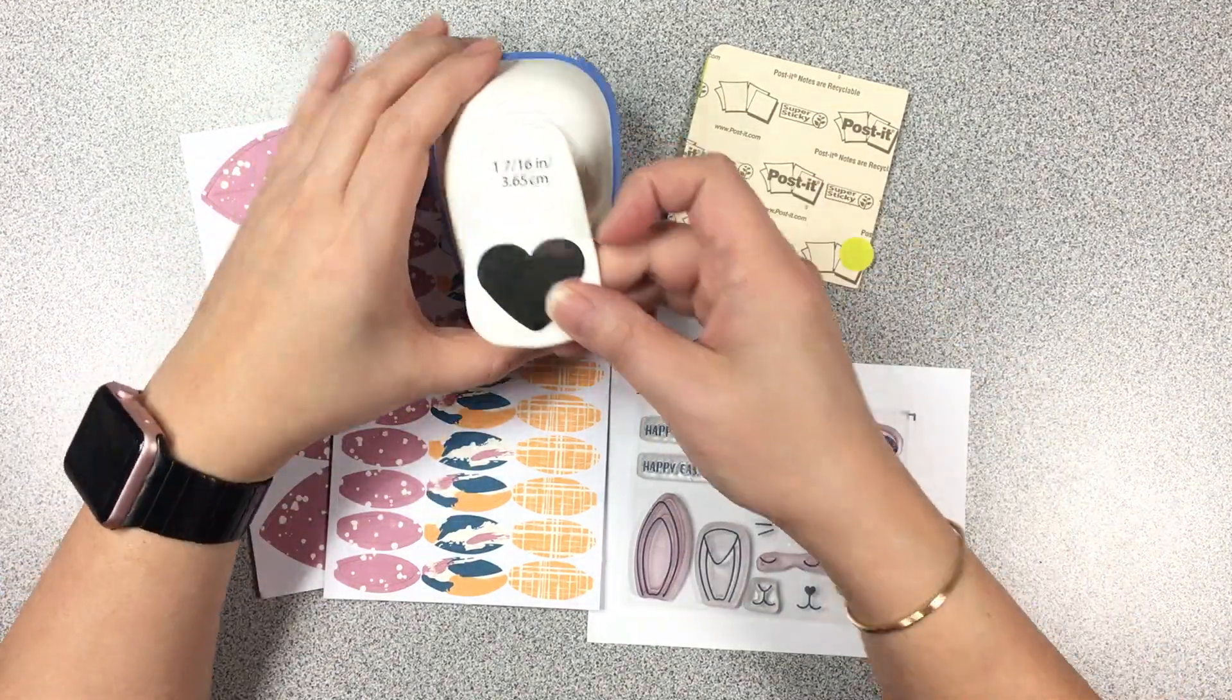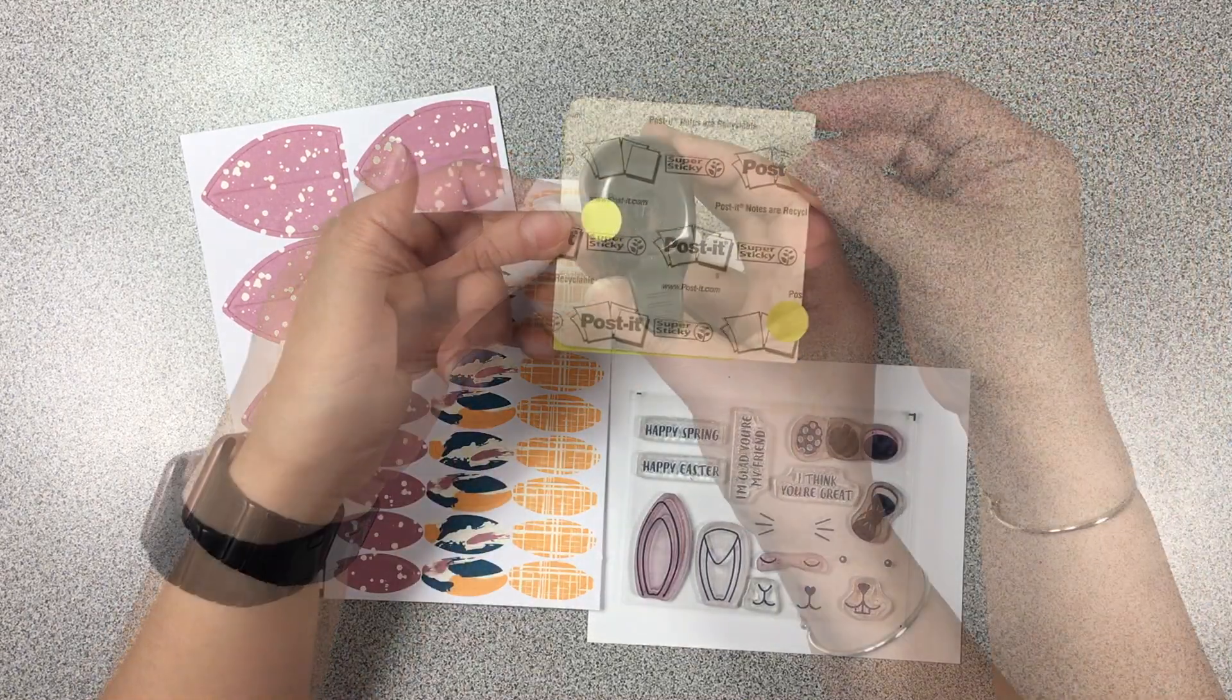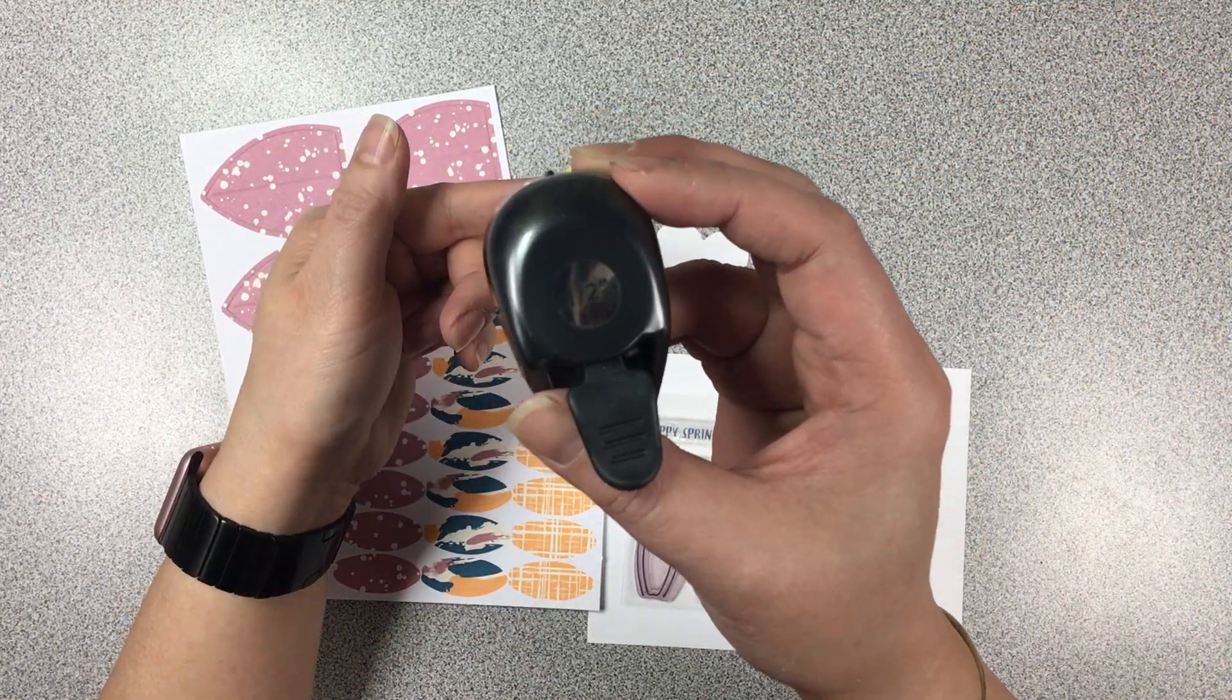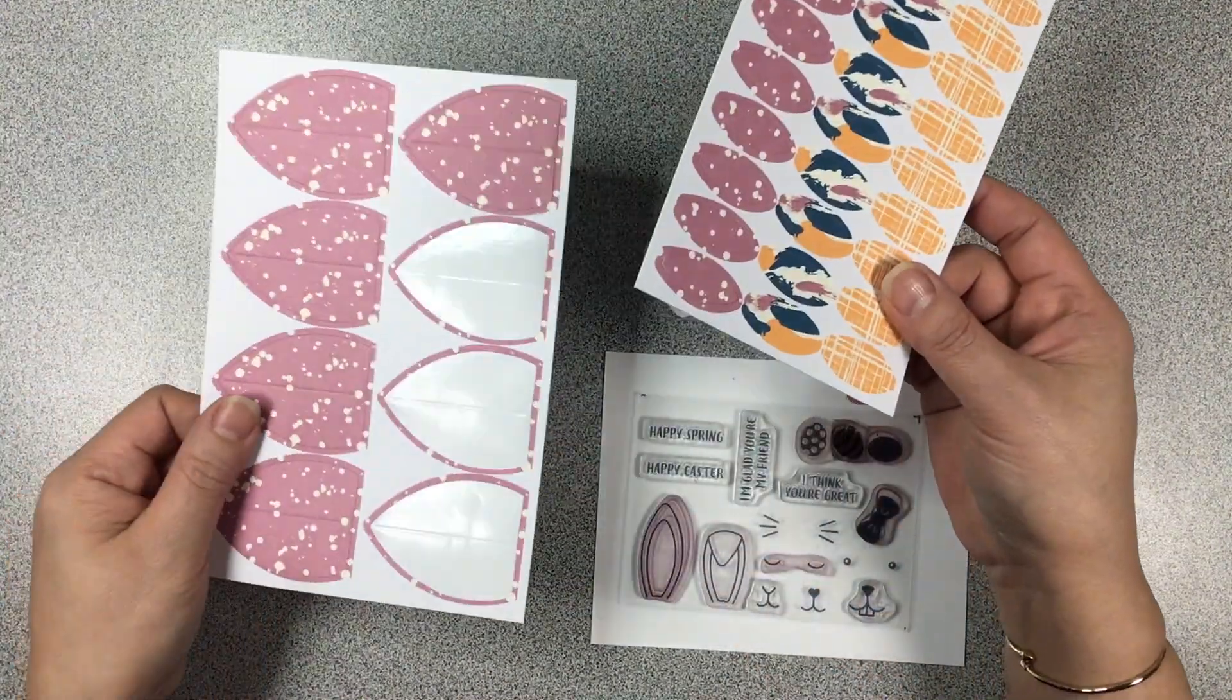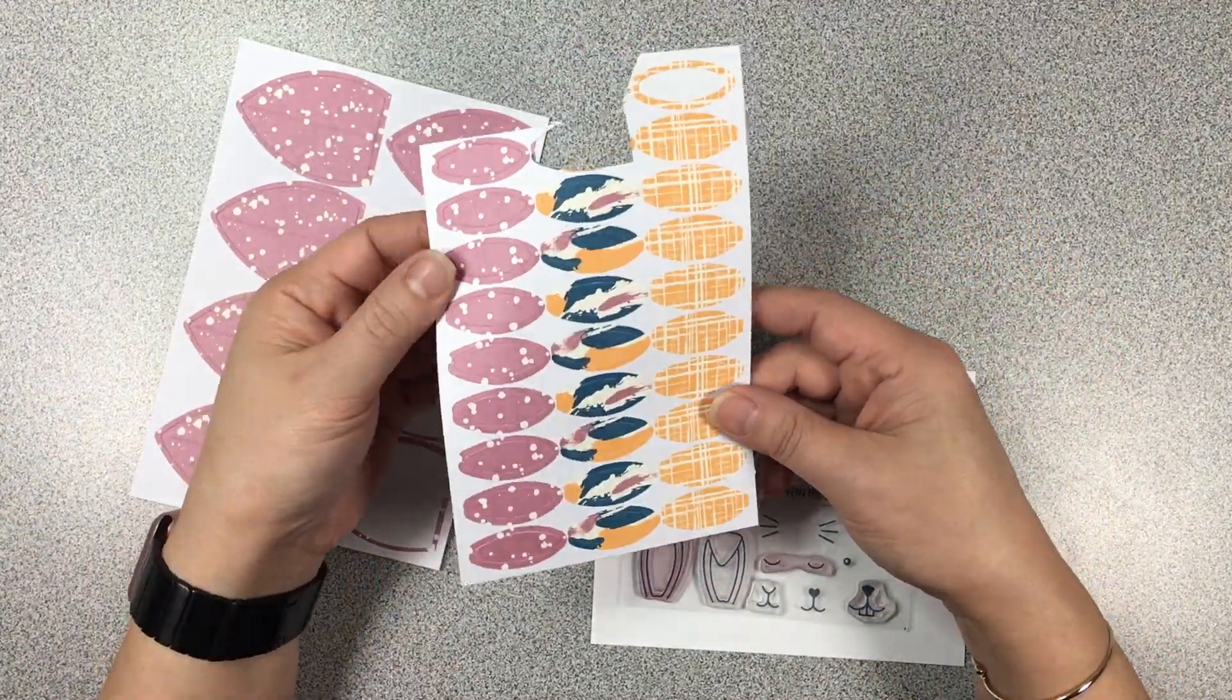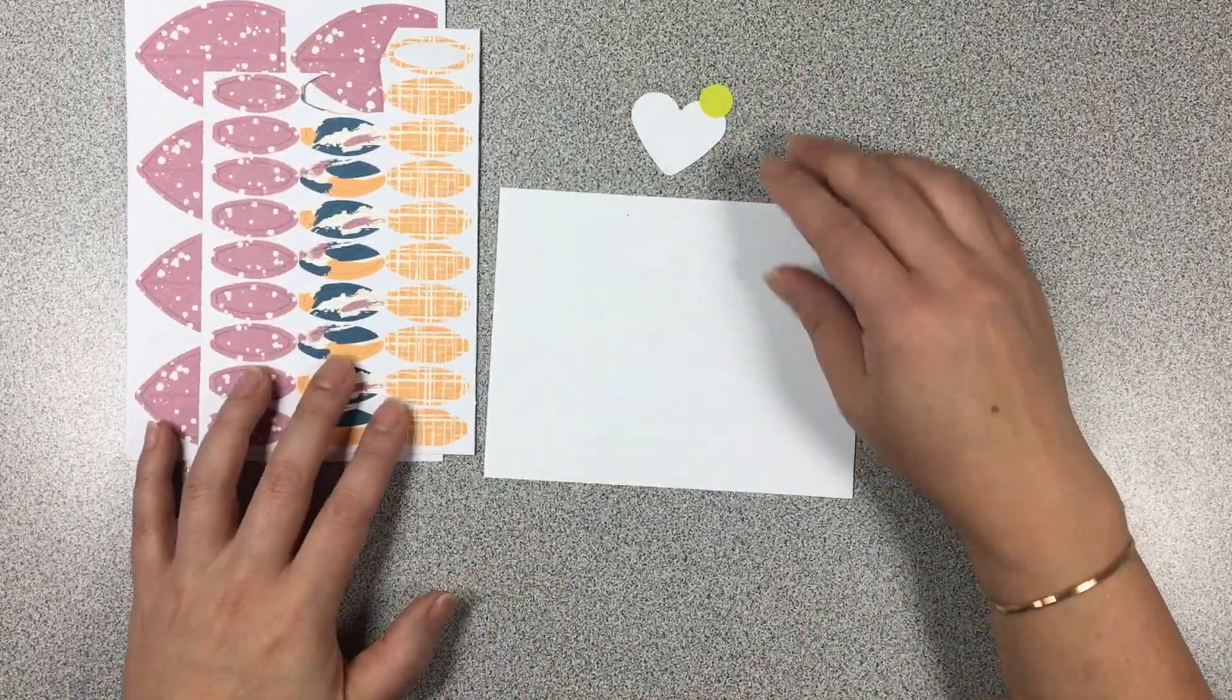First is the heart punch that we've used in the past to create the bunny face and we're going to use a tiny piece of the post-it note. We're not going to use that half circle punch anymore. I'll just show you what I'm going to do there and then we're going to use two of the small bunny ears and one large bunny ear from the kit.